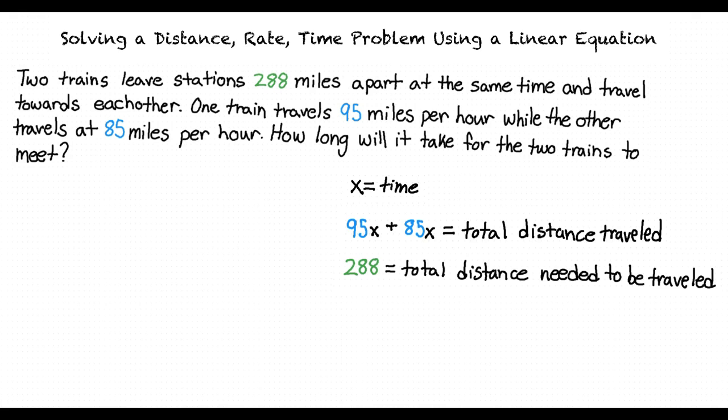To find the time that it takes for the two trains to reach each other, we would set the rate of the first train multiplied by the time plus the rate of the second train multiplied by the time equal to 288 and solve for the time. Doing so, we find that the total time that it took for the trains to meet each other is 1.6 hours.